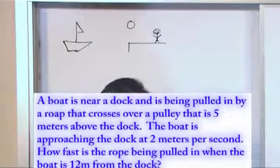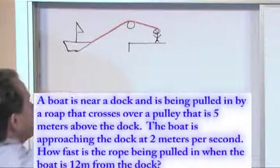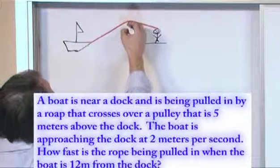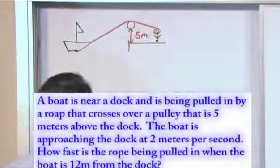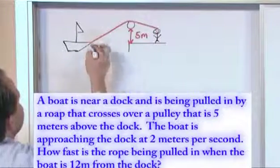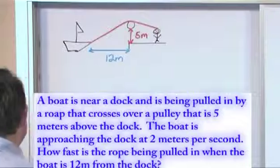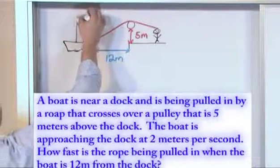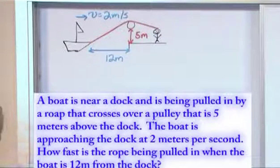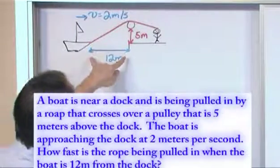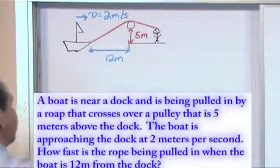What we have is this rope that goes over the pulley and then down to the boat — we're pulling it like this. This vertical distance here is five meters. The moment we're really interested in is the distance from the boat to the dock, which is 12 meters. And we're also given that the boat is coming in at a velocity of two meters per second. So this is really all the information given to us: the pulley is five meters above the ground, the boat is coming in at two meters per second, and it's 12 meters out.